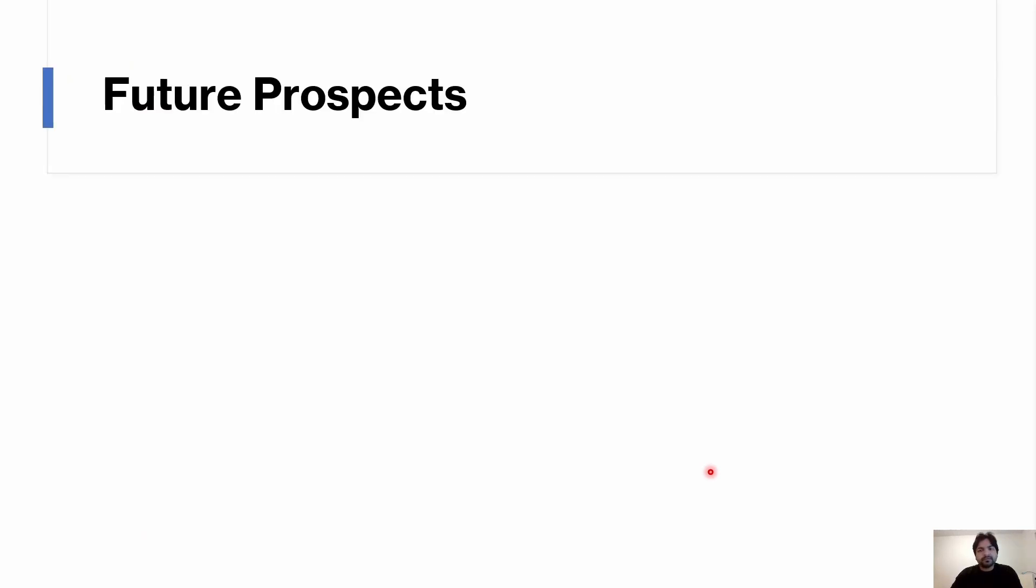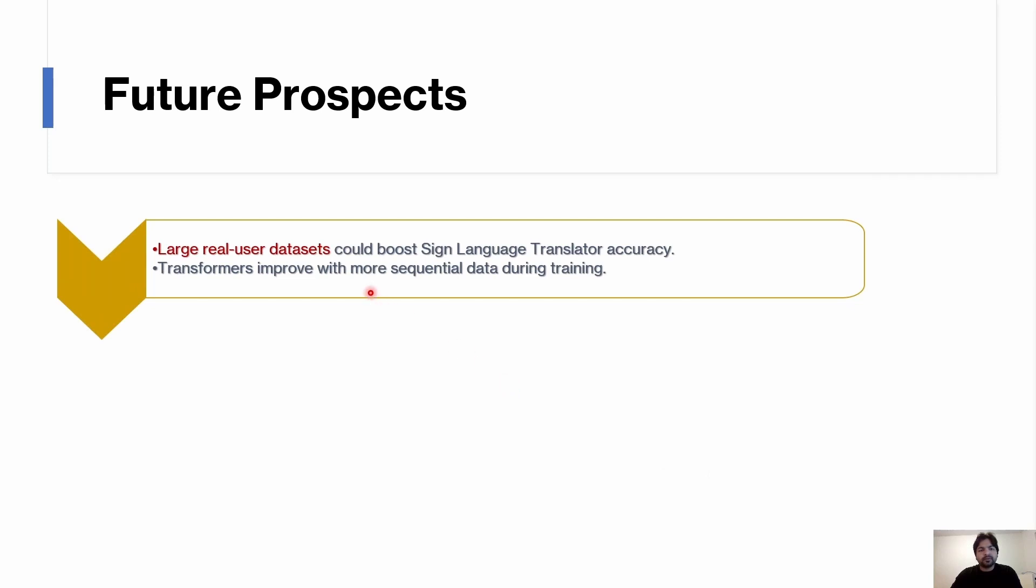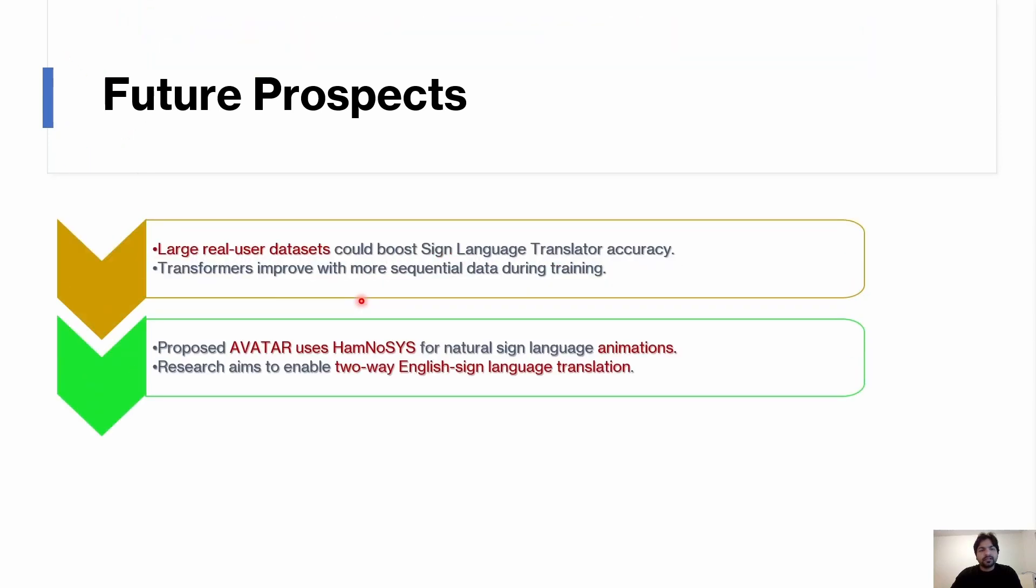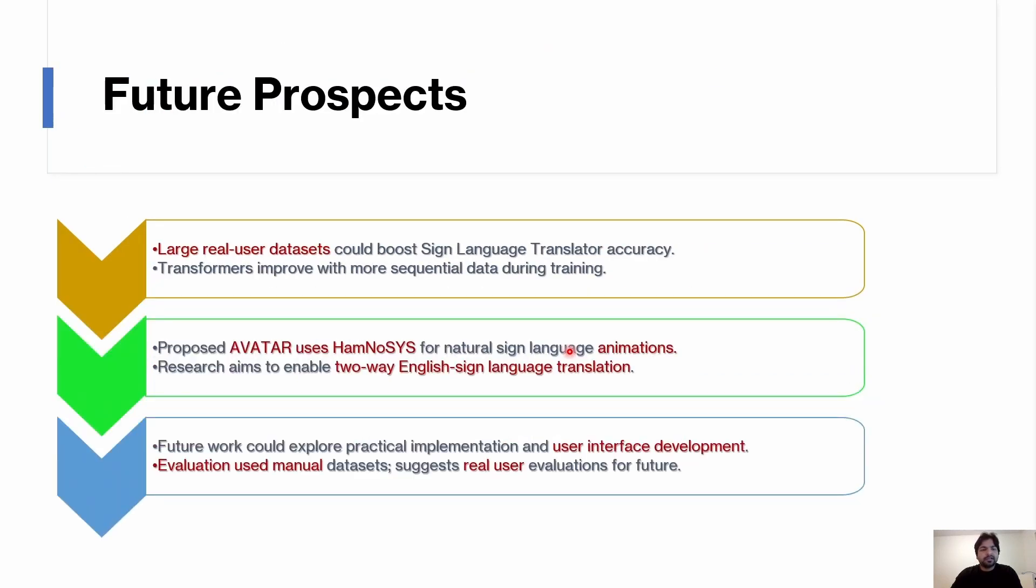For future prospects, you can build a transformer model by using datasets. You can use avatars instead of fragmented videos to make it more seamless and professional. It is only a one-way translation - we can build a model which does two-way translation. You can develop a user-friendly UI so it is accessible for all. For this, I was the only one evaluating, but real evaluation takes place with real users. We can make users provide feedback and depending upon their feedback, we can improve our model.